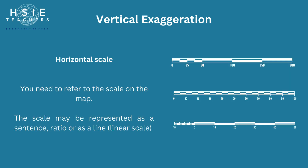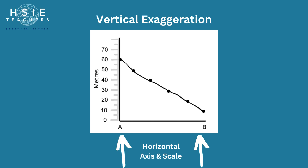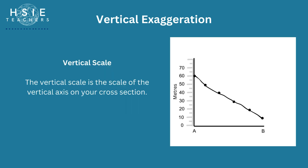To find the horizontal scale, you need to refer to the scale of the map. Remember that when you drew your cross-section, you marked points based on the placement of contour lines. The scale may be represented as a sentence, ratio, or as a linear scale. Here you can see the horizontal axis — this axis on your graph will be the same as the map.